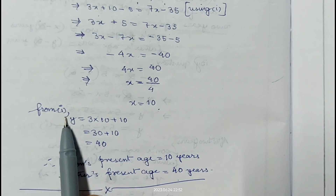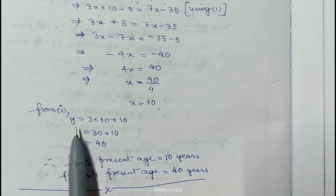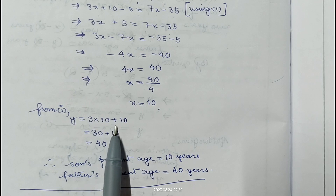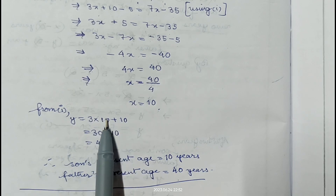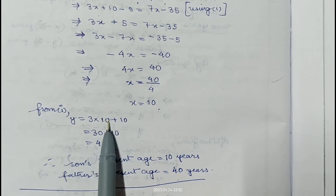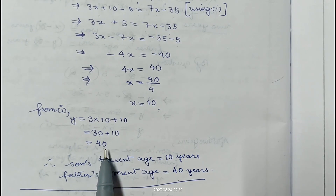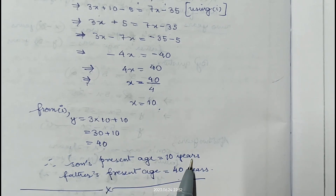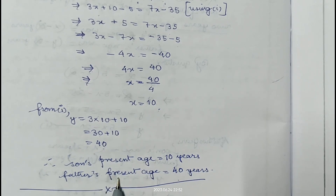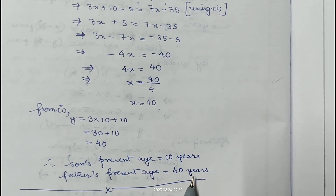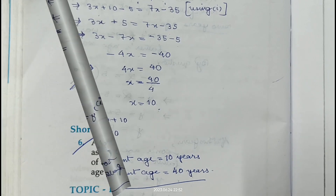From equation 1, y equals 3x plus 10. Replacing x with 10: y equals 3 into 10 plus 10, which is 30 plus 10, giving 40. Therefore son's present age is 10 years and father's present age is 40 years. And there is the answer.